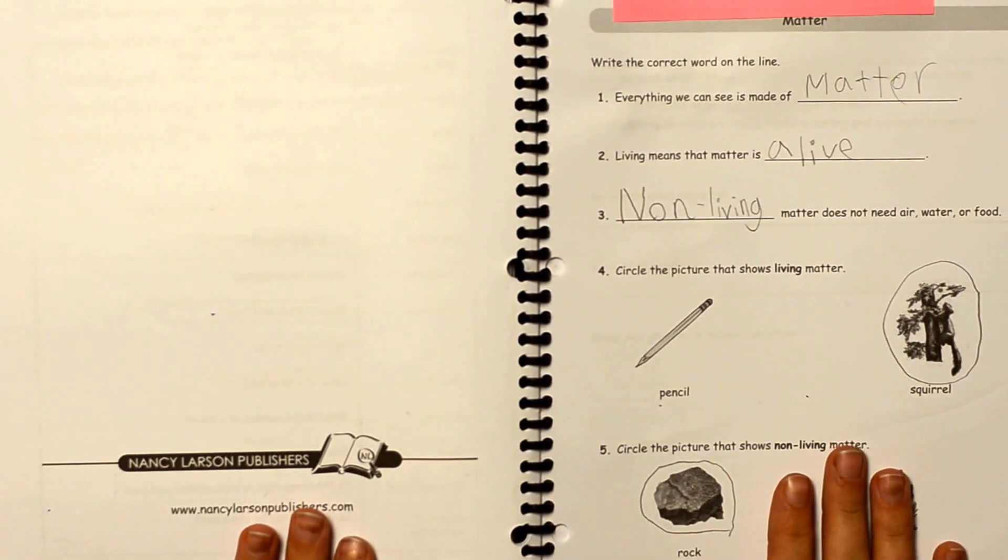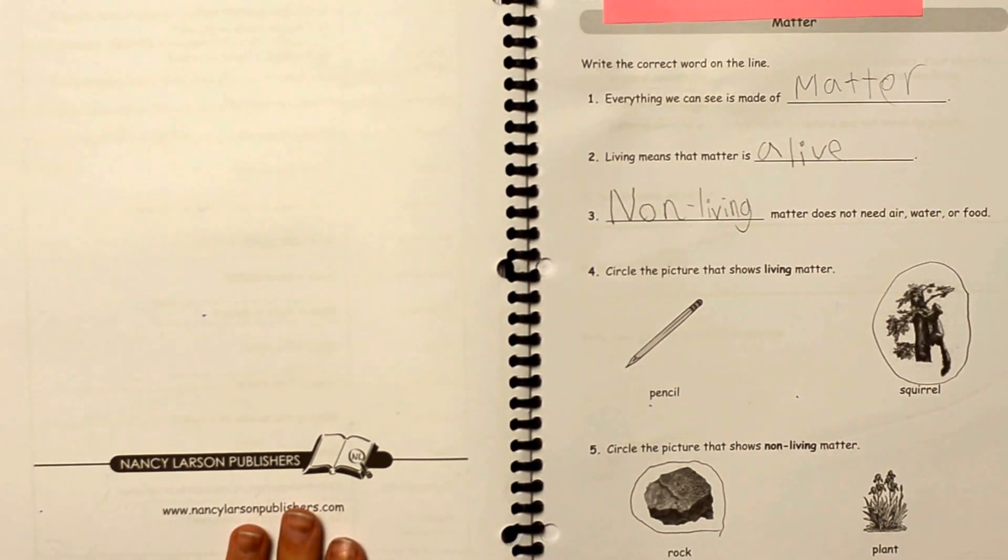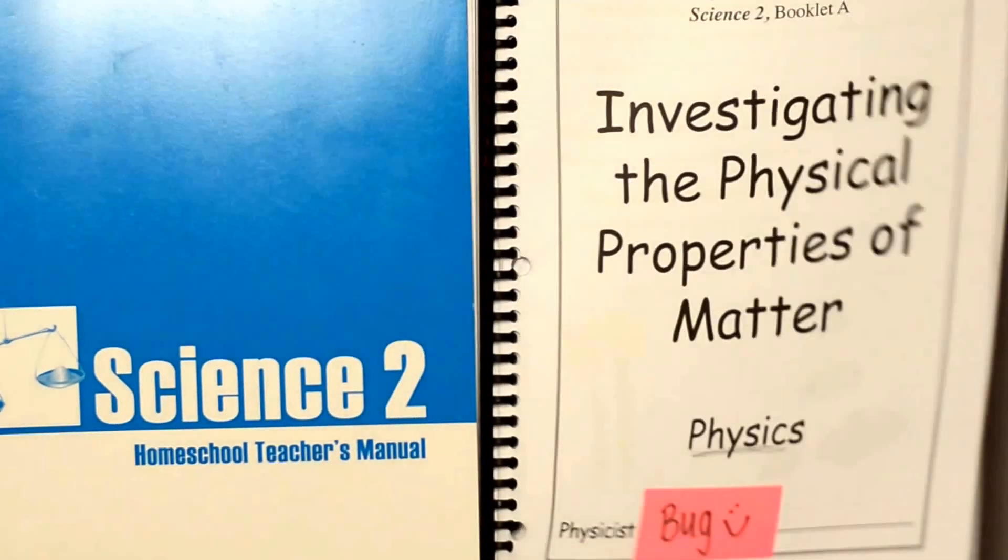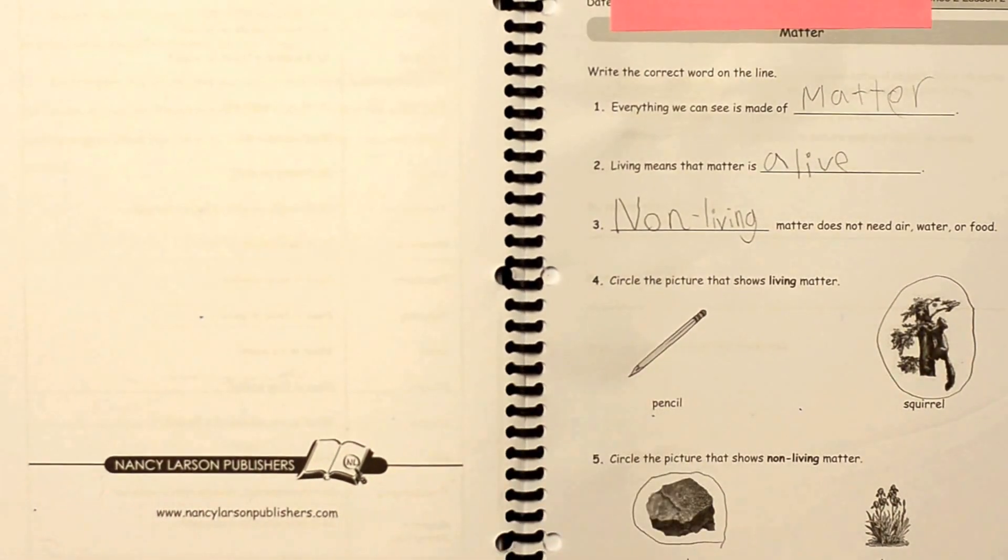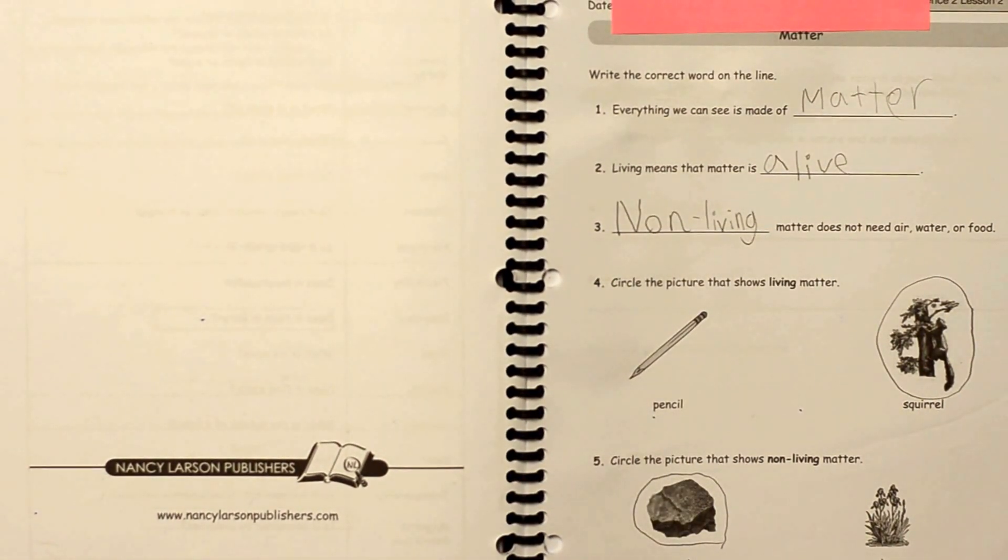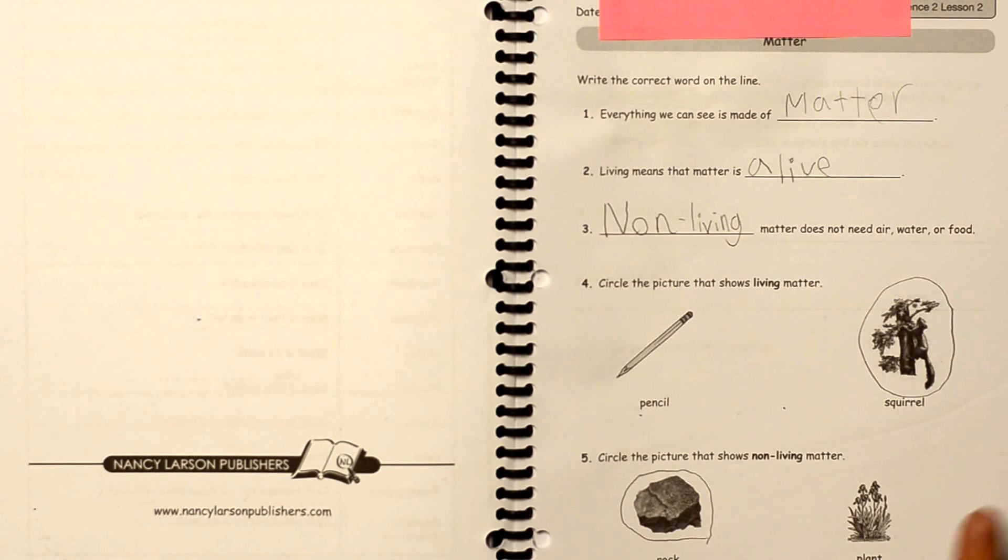Also we have the student review pages. I actually spiral bound this myself because I'm a little OCD and I like to have everything together. So these are going to be separate in your materials, but I put them together for me.